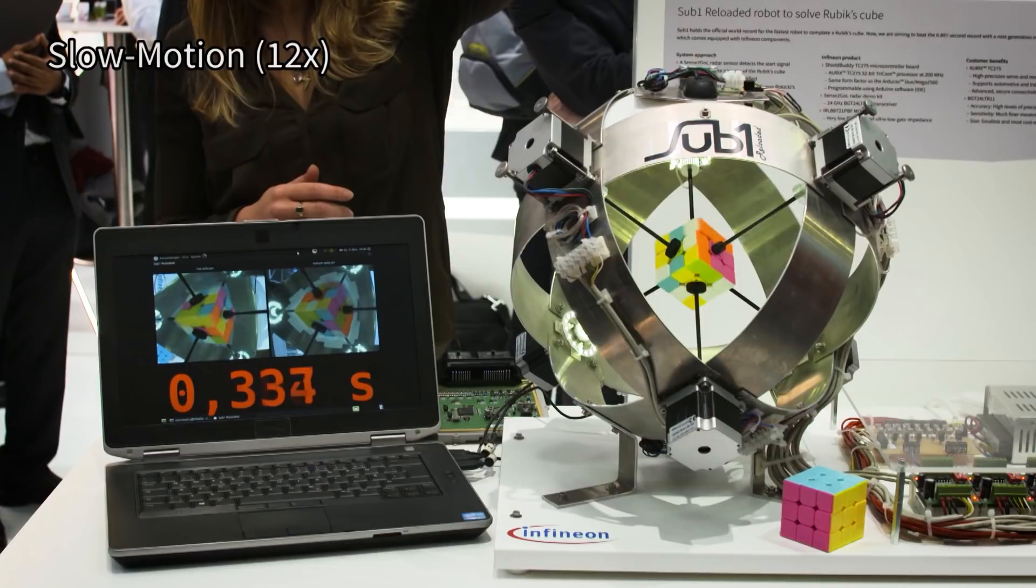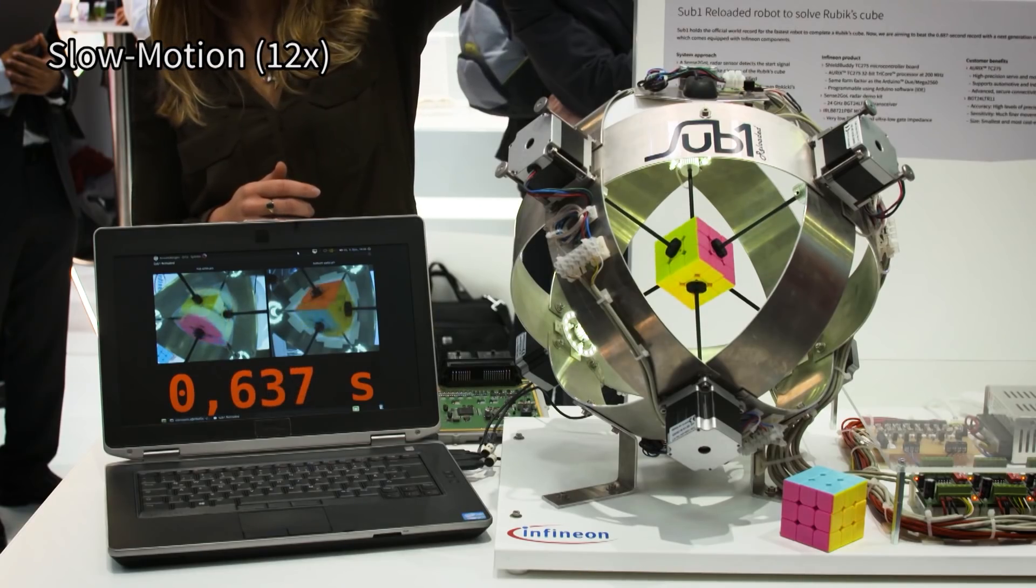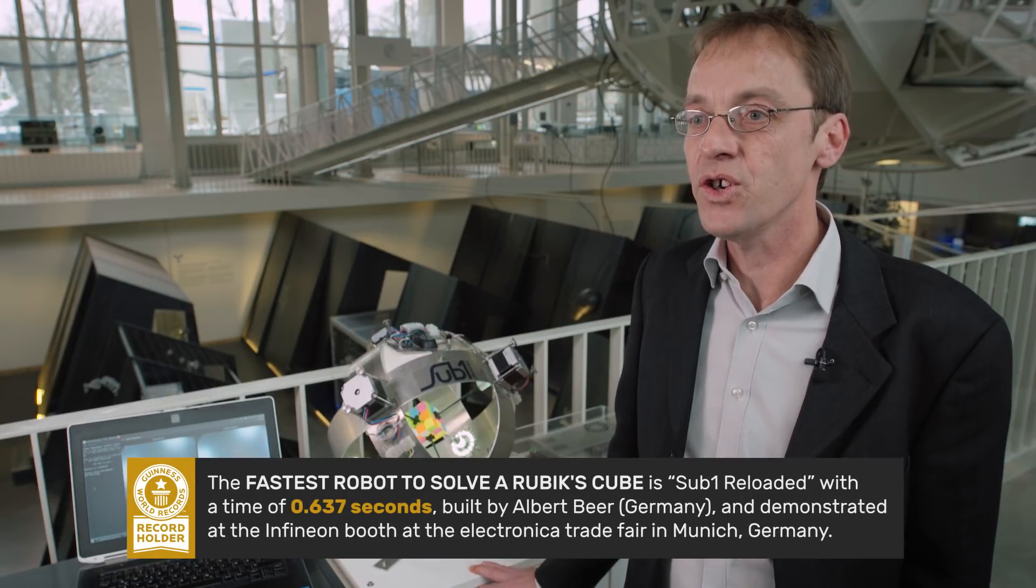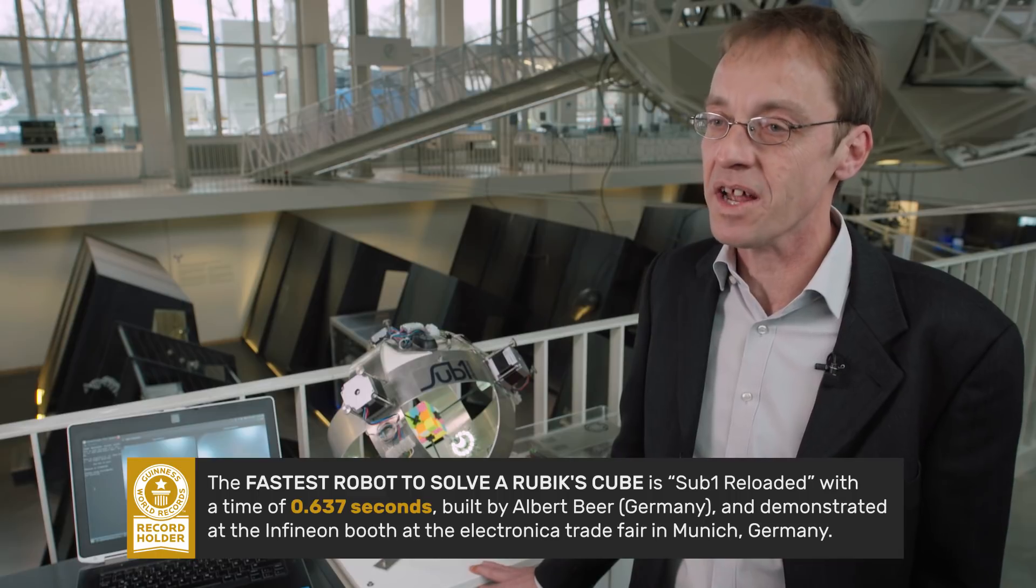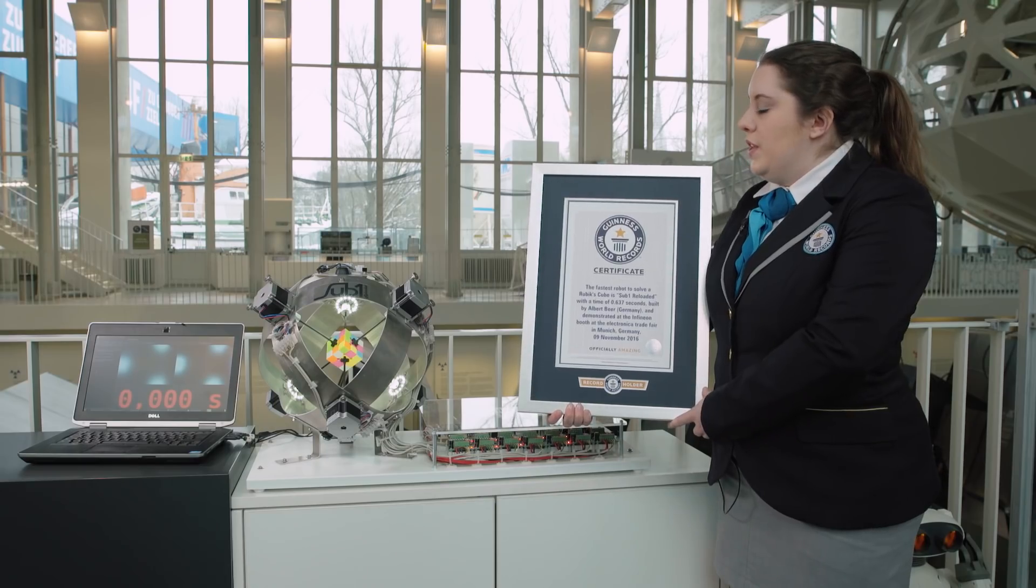Current record to solve the Rubik's Cube, 0.637 seconds. Really, really fast. The record for a human is above four and a half seconds, which is, yeah, much slower. Still pretty fast, but much slower.